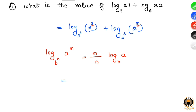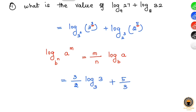Applying the property, m becomes 3 and n becomes 2 for the first term, giving 3/2 times log 3 base 3. For the second term, it becomes 5/3 times log 2 base 2.